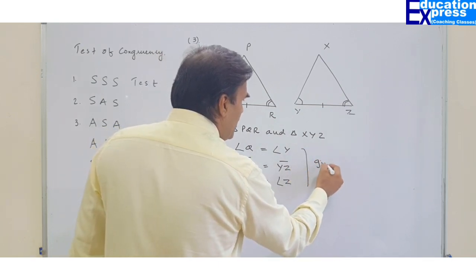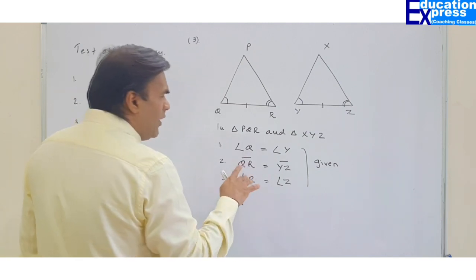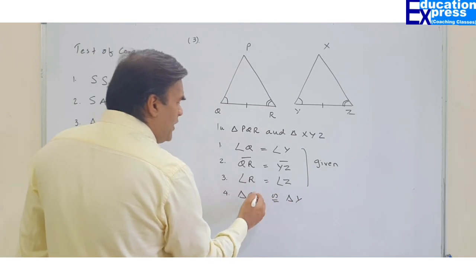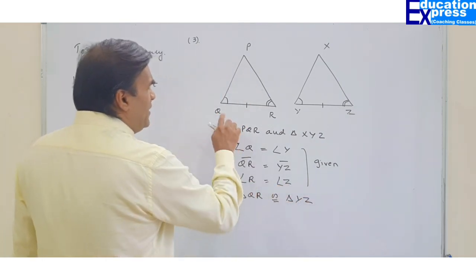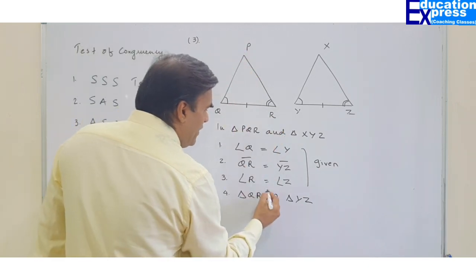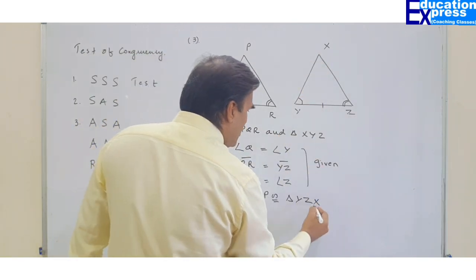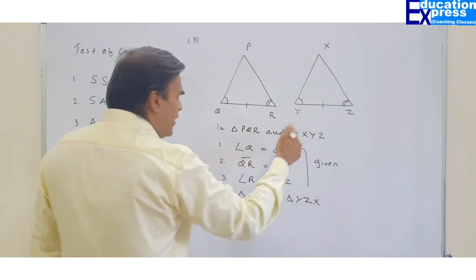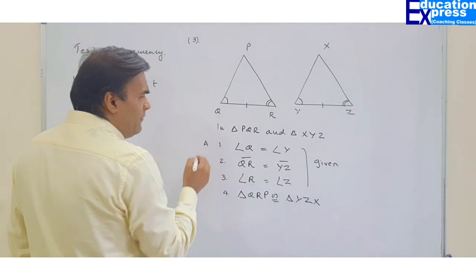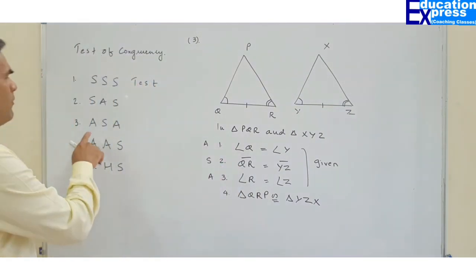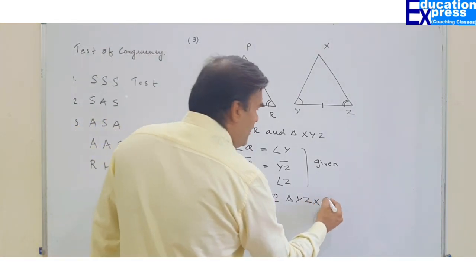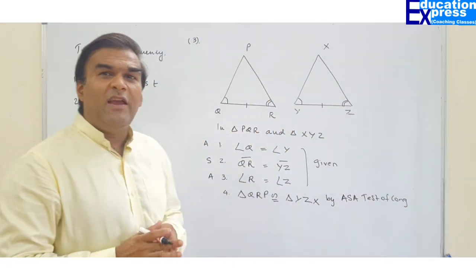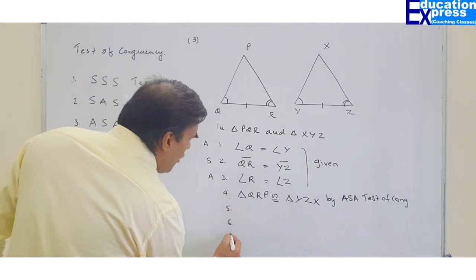All this information was given to us in the question. Now for one-to-one correspondence: we know Q corresponds to Y, and R corresponds to Z. That means QR is accounted for, and by default P is the remaining vertex. So P comes here and X comes here. In triangle PQR and triangle XYZ, this is angle, this is side, and this is angle. We have complied with the Angle-Side-Angle test. These two triangles are congruent by the ASA test of congruency. All together we have six parts of triangles, so the remaining three parts are congruent by CPCTC.